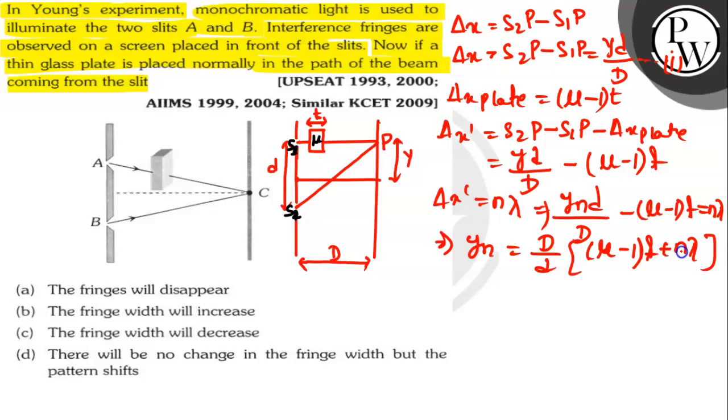Let us find the value of Y for N plus 1. We have yN plus 1 equals capital D by small d into mu minus 1 into t plus N plus 1 into lambda.